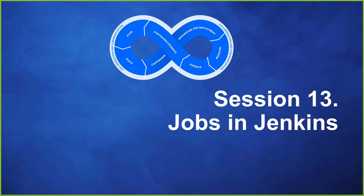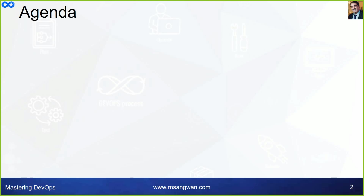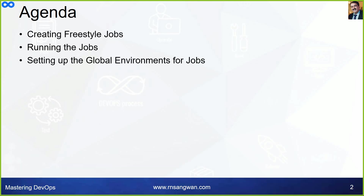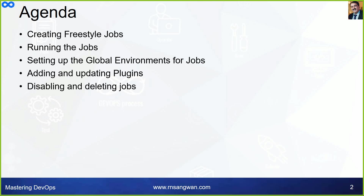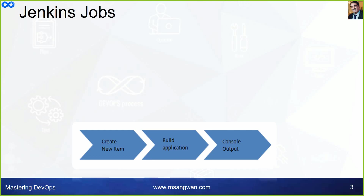Session 13: Jobs in Jenkins. This session will cover how to create a job, how to use Git, how to build a project, and how to check build logs. Topics include creating a freestyle job, running jobs, setting up a global environment for jobs, adding and updating plugins, and disabling and deleting jobs.